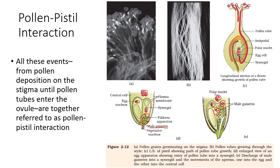Here we can see an electron micrograph of a pollen grain germinating on the stigma, and the pollen tube growing through the style. To summarize: compatibility of pollen is determined by chemical exchange between the stigma and pollen grains — compatible pollen is allowed to germinate, non-compatible is not. The pollen typically has two cells — a generative cell and a vegetative cell. The generative cell divides by mitosis into two male gametes, which enter via the filiform apparatus into the synergids, releasing the male gametes and initiating fertilization.